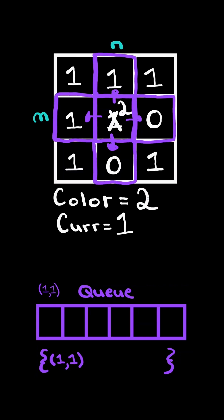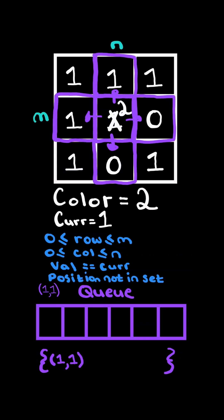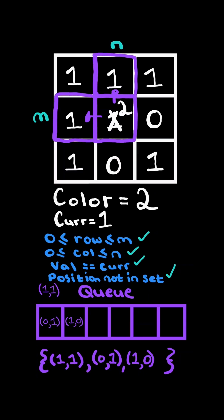Now for each of these adjacent positions, we need to check for conditions. We need to check if the row is within bounds, the column is within bounds, the value at that position is equal to the current pixel 1, and lastly the position is not in the set. Only these positions satisfy all the conditions. So we append those positions to the queue and add those positions to the set.